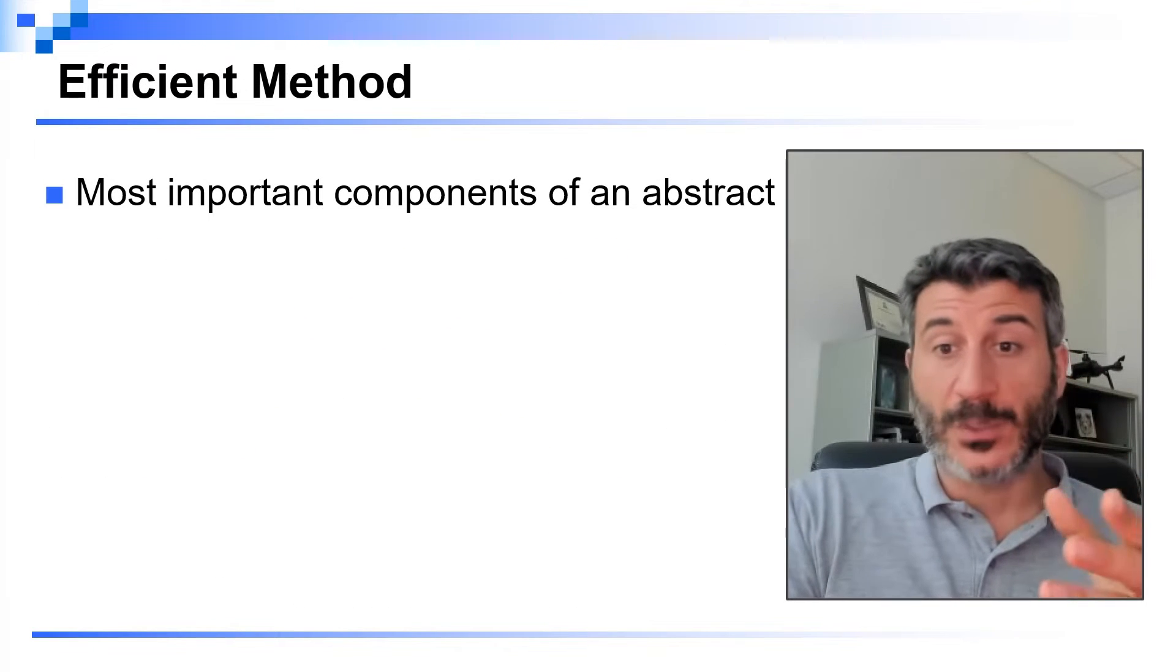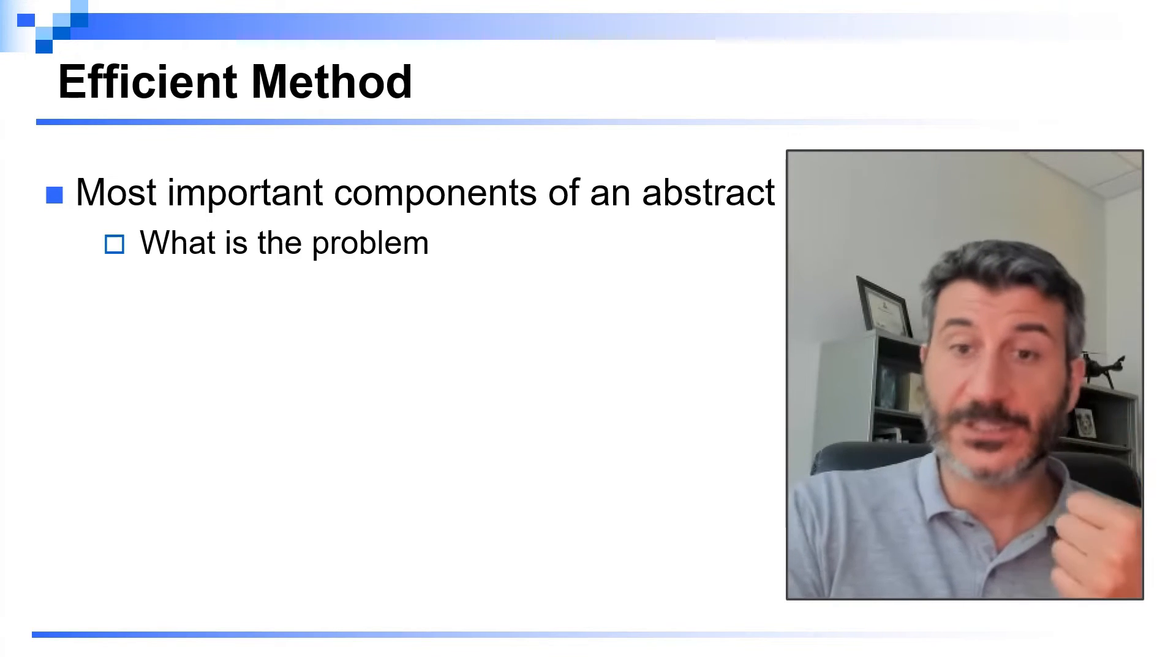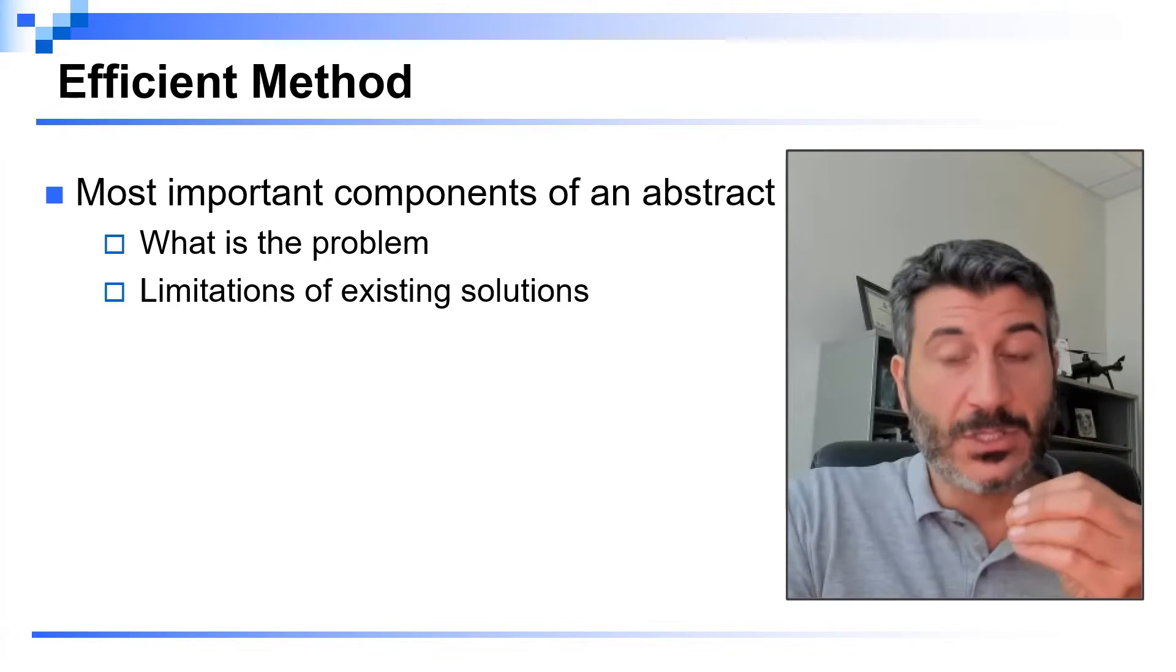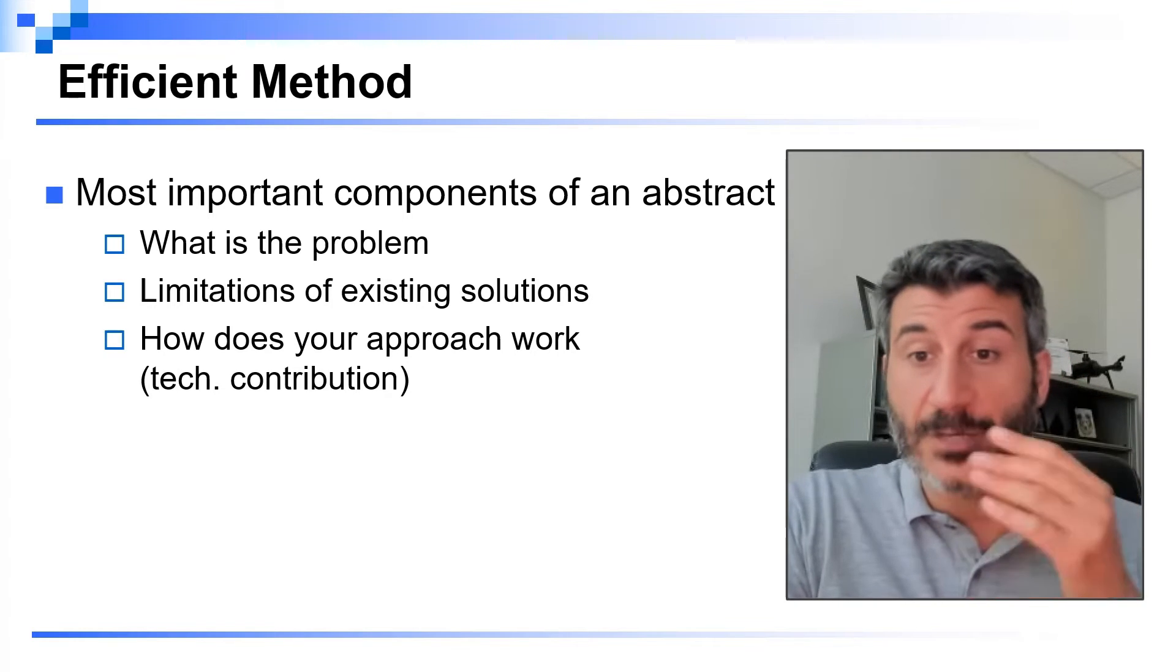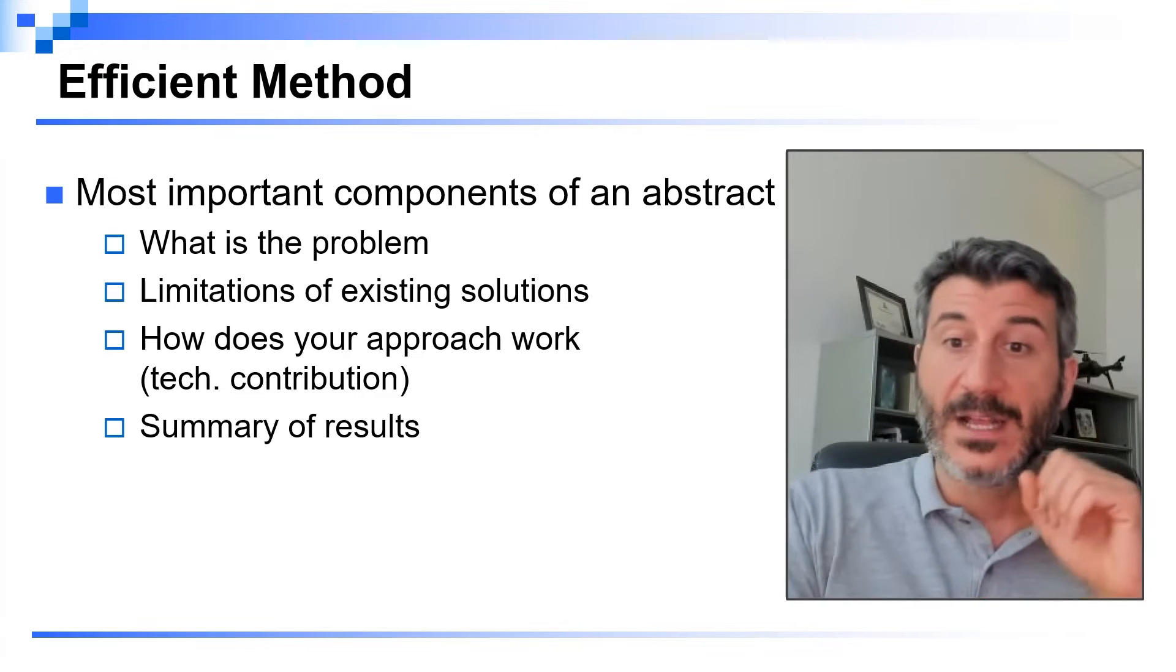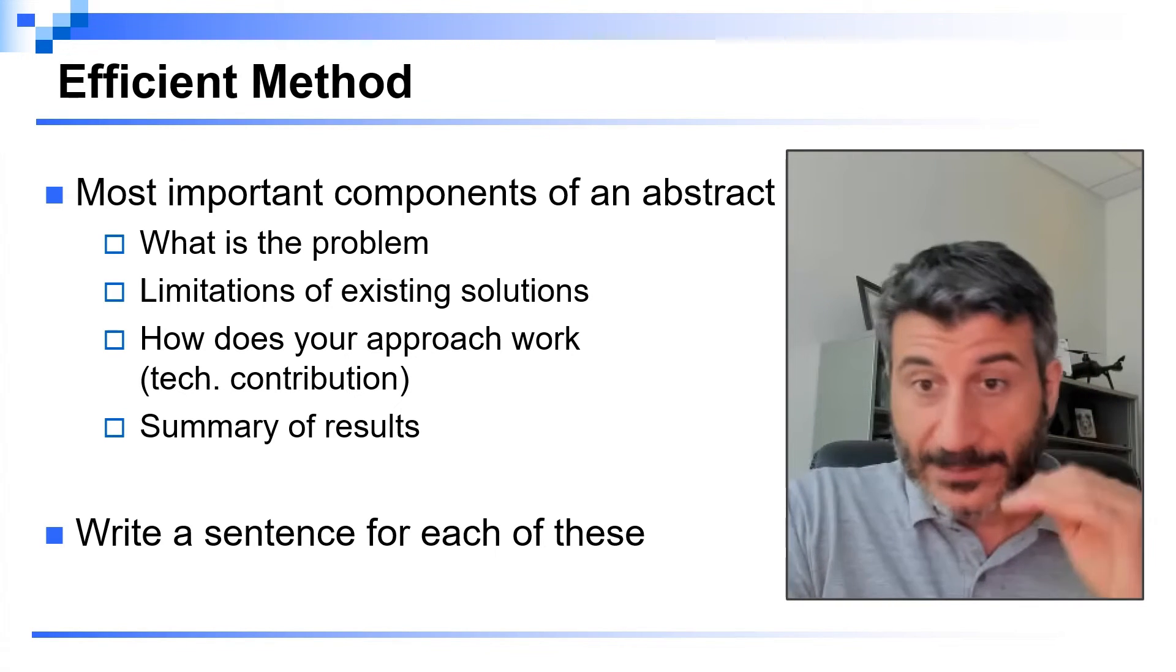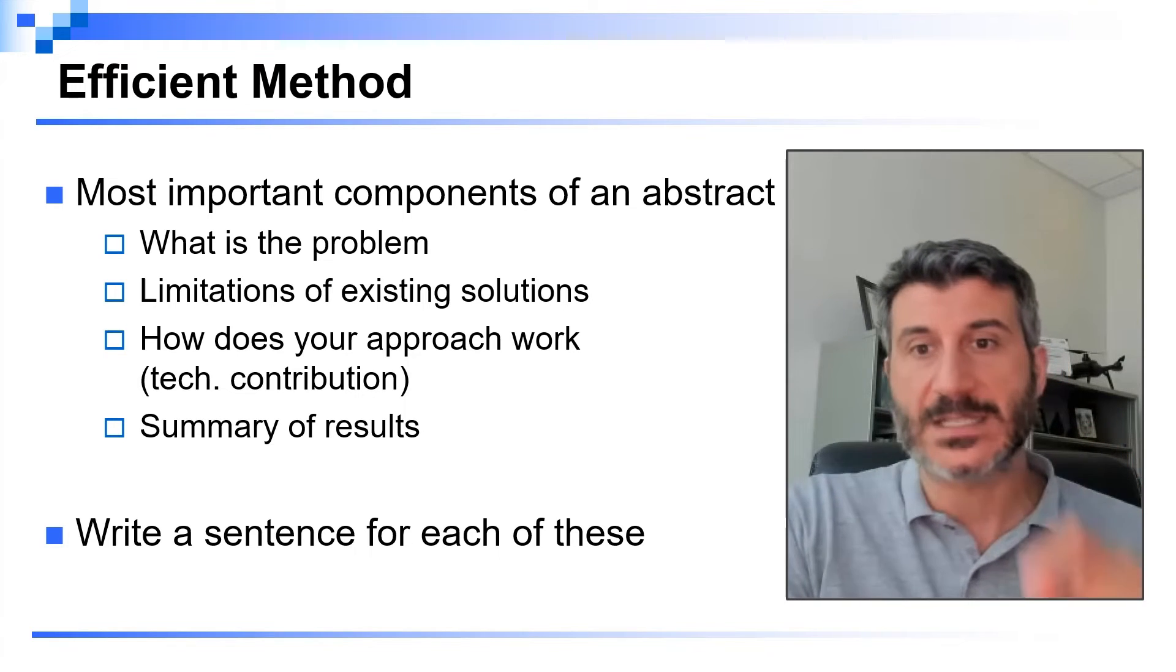The method is the following. First, you should familiarize with the most important components of an abstract. The first one is, what is the problem that you are considering? The second one is, what are the current limitations of existing state-of-the-art solutions? The third one is, how does your approach work? What is the technical contribution of your paper? And the last one, what is the summary of the results that you provide in this paper? You should write, in a bullet form list, very short sentences describing each of these components.